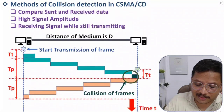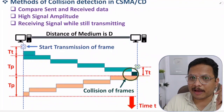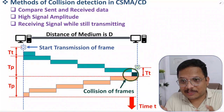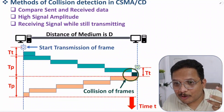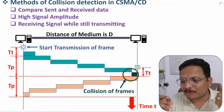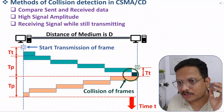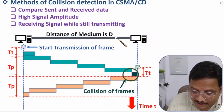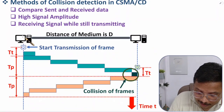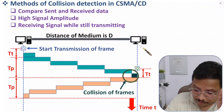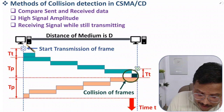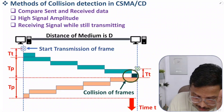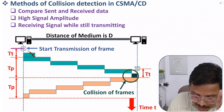Now let me explain how many methods of collision detection there are in CSMA/CD. But first, let me explain how collision is happening, because you need to understand that before you can detect it. For example, if we have two hosts connected by a medium with distance d — the horizontal axis represents distance and the vertical axis represents time — one host initiates transmission at one instant and the other host initiates transmission at another instant.